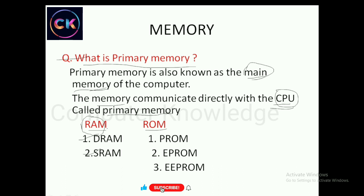RAM is volatile memory. When power supply is cut, the data is automatically lost — that is why it is called volatile memory. For example, if you store a password and the power supply goes off, the data is lost automatically.